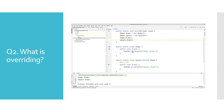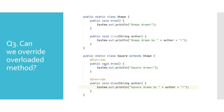So if we would not have a draw method in the Shape class, we would get a compile time error. Here we have defined two references of type Shape — we assigned a new object of type Shape to the first one and an object of type Square to the second one. We called the draw method on both of them and in the console output we got two different messages, so both implementations of draw have been executed based on the actual objects assigned.